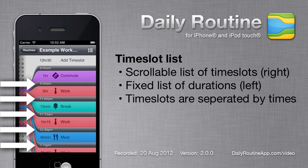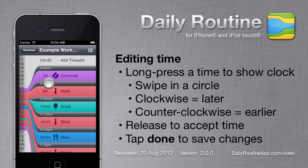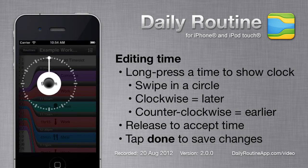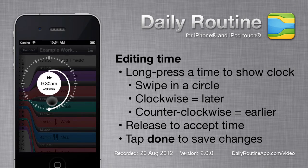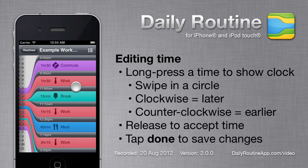Time slots are separated by times. To edit a time, long press it, then move your finger around in a circle, then release. Tap Done to accept a new time, or long press again to change it.